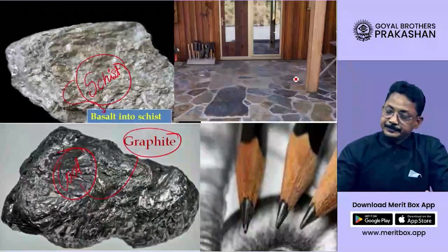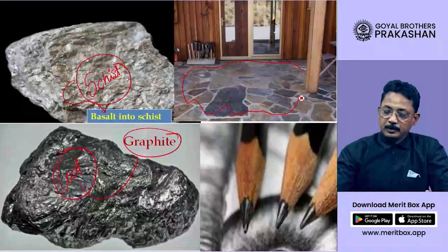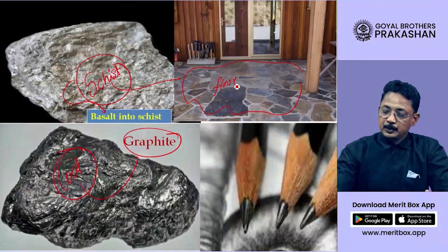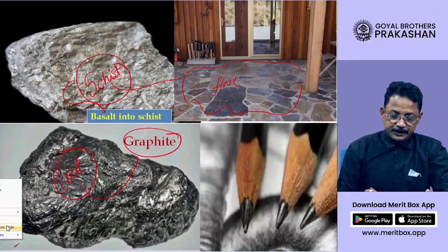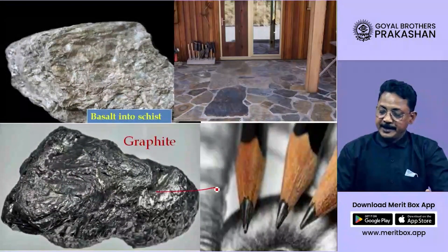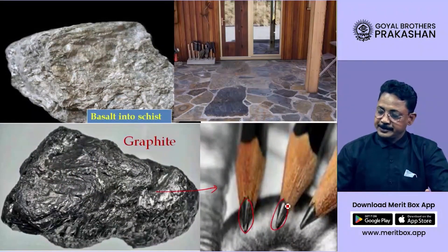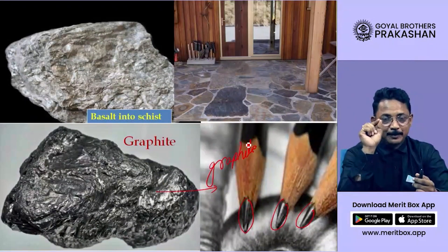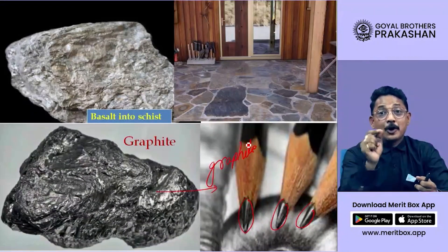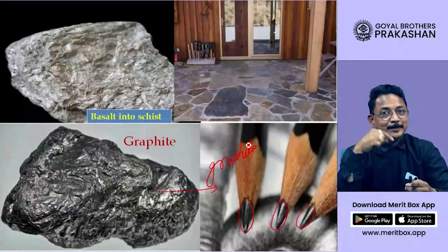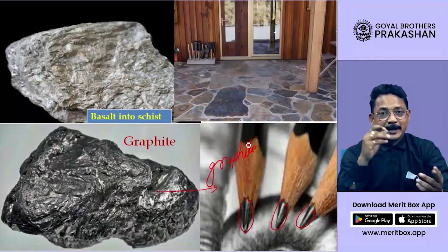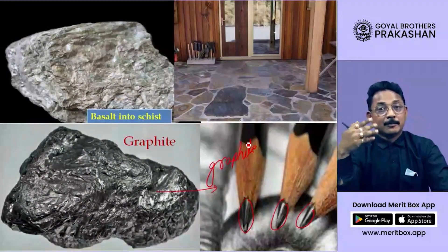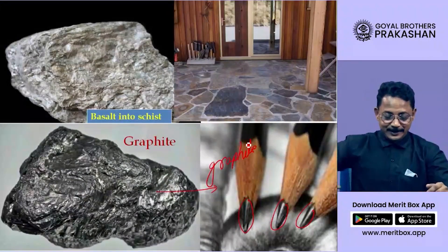Look at this flooring — it is made out of schist. For making this flooring we are using schist. Graphite is used in pencil tips — they are made up of graphite. Next time when you look at a pencil tip, please remember you are using a rock for writing. The name of that rock is graphite, which is metamorphic, formed from coal.